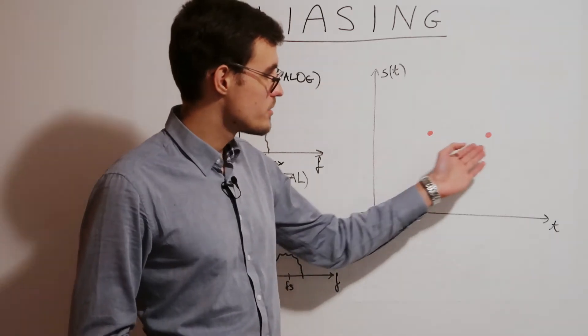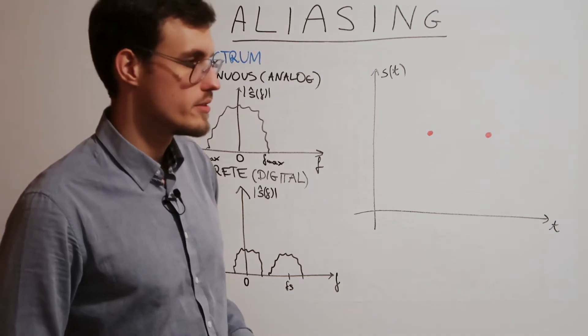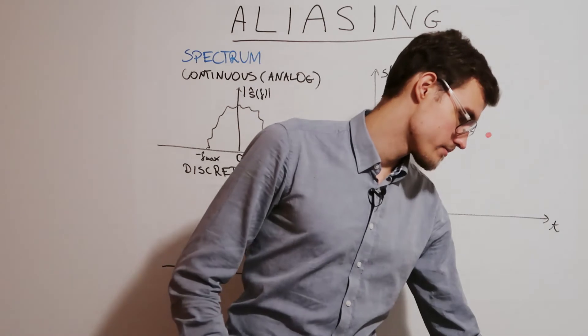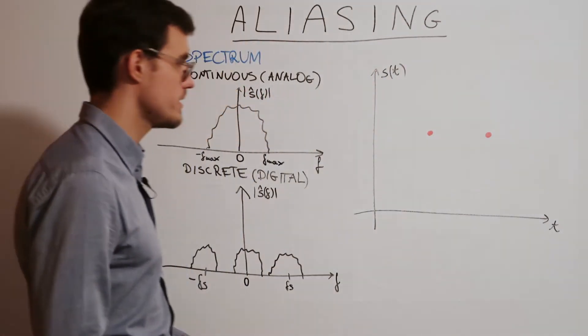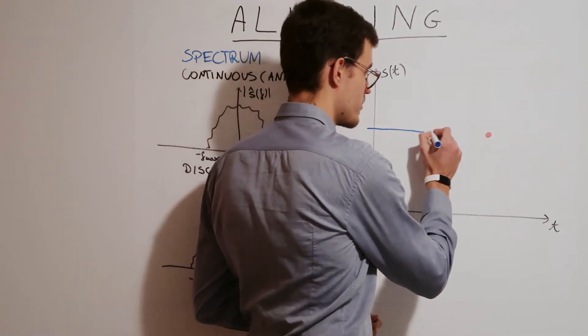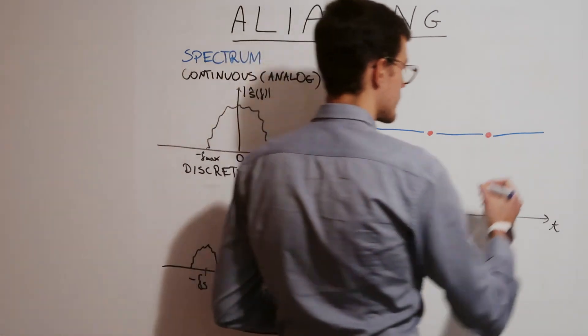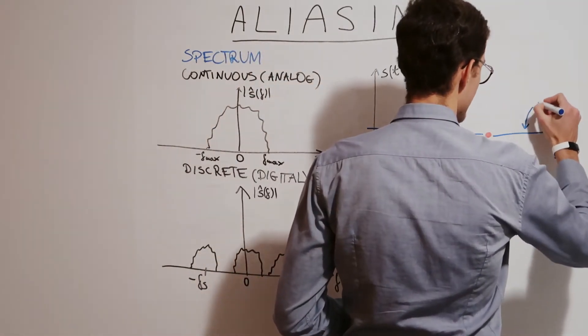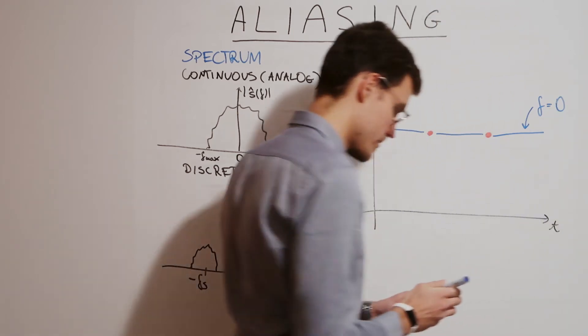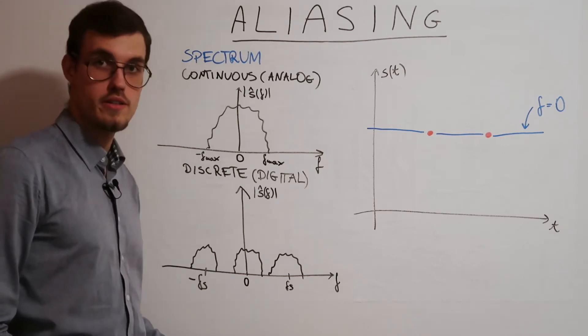And we get these two points at equal height right here. So we want to reconstruct the signal. And I may very well say that, okay, presumably it's a constant function. So I can draw it like this. And I'm saying that this one has frequency equal to zero.